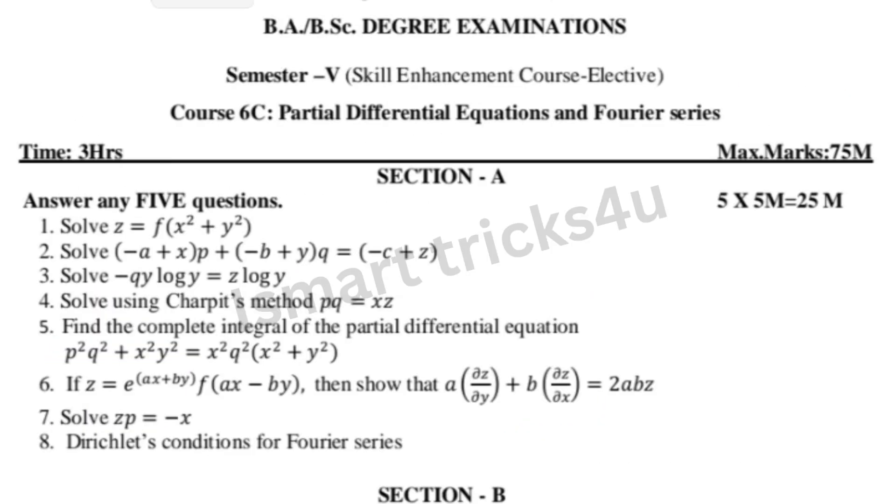Now, the first paper is paper 6C: Partial Differential Equations and Fourier Series. Section A has short answers. Each unit of this is compulsory, and short answer questions are included.